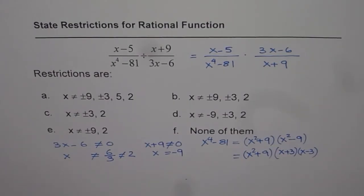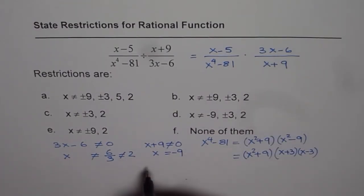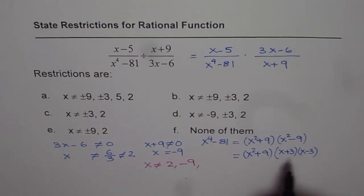With that, we get all the restrictions. From the first factor, x is not equal to 2. Then we have x is not equal to -9. From the factored denominator, we get x is not equal to ±3.